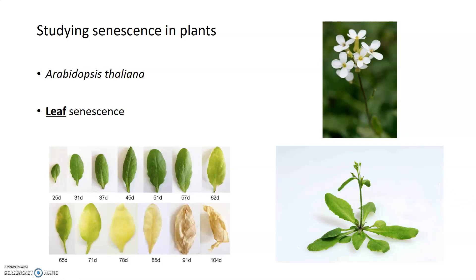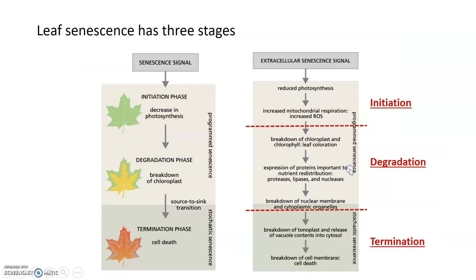Leaf senescence is broken down into three major stages that we're going to talk about on the next couple of slides. These three stages are initiation, degradation, and termination.